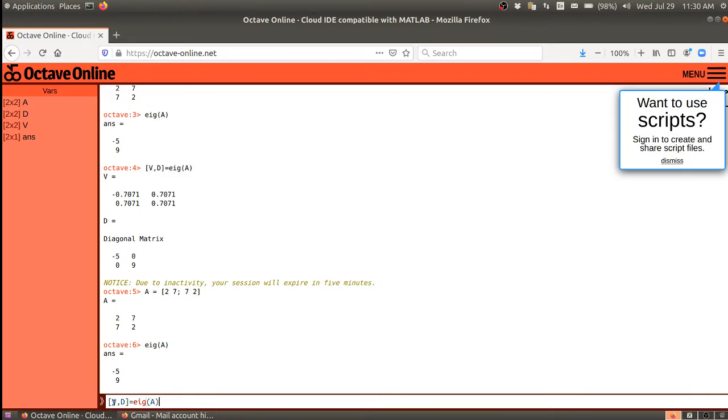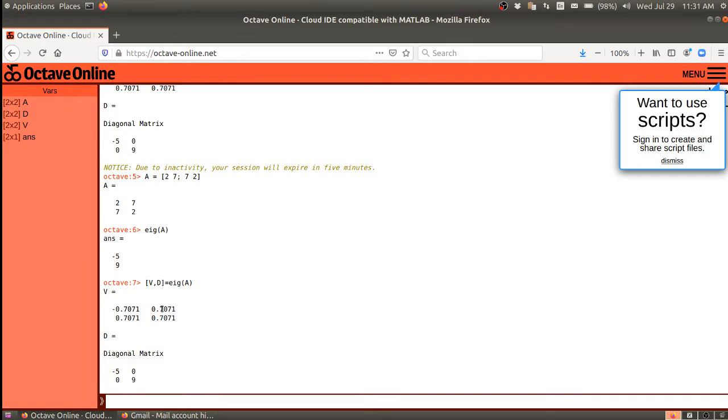But what about the eigenvectors? To get the eigenvectors, we use this command: [V, D] = eig(A). When we hit enter, you're getting two matrices as output. D is always a diagonal matrix where the diagonal entries are the eigenvalues. The first column of V is the eigenvector associated to minus 5, and the second column is the eigenvector associated to the eigenvalue in the second column of D.